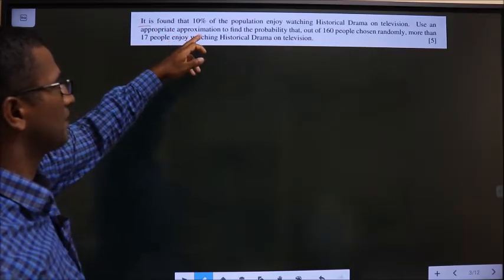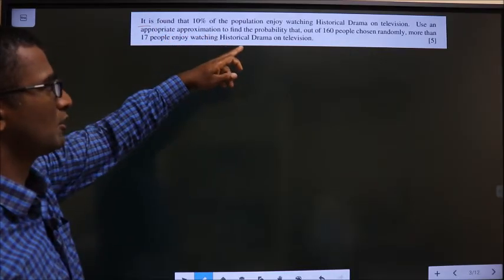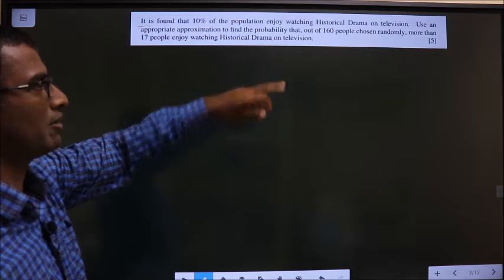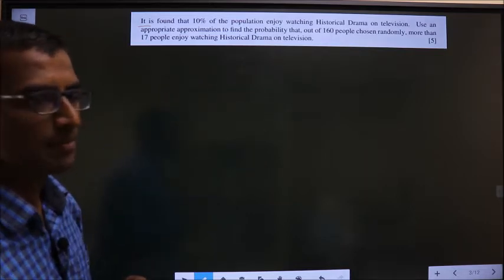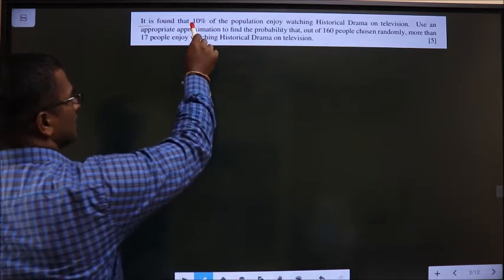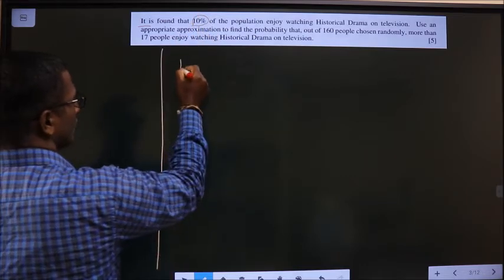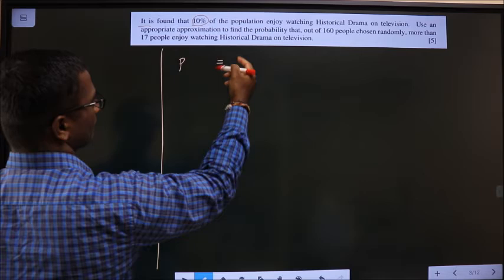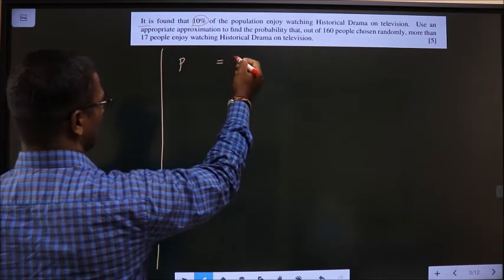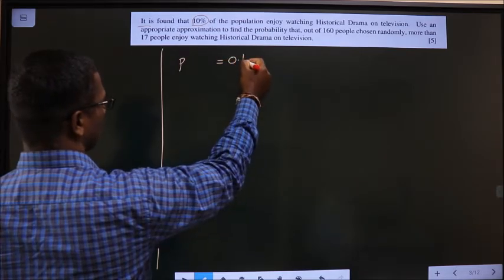It is found that 10% of population enjoy watching historical drama on television. Here 10% is nothing but probability. So probability of watching historical drama is 10%, that is 0.10.